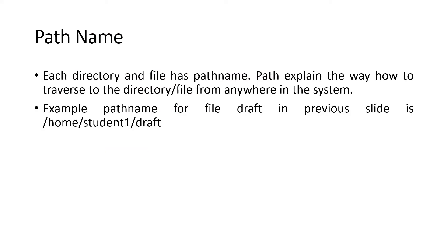Next is the path name. Each directory and file has a path name. The path name explains how to traverse to the directory or file from anywhere in the system. For example, from the previous slide, the path name for the file draft is slash home slash student one slash draft. We'll look at this in more detail in the next slide.